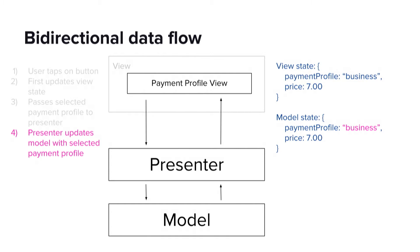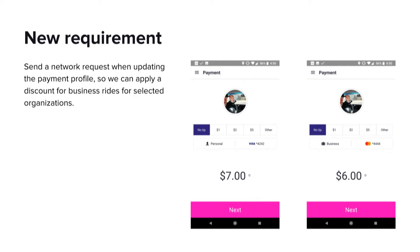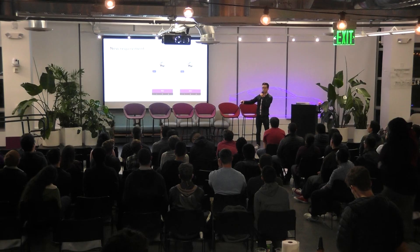But what happens when we get a new product requirement? When the passenger selects the payment profile, our application has to send a network request to refetch the price of the ride. Suppose that Lyft has written an enterprise contract with an organization so that all of the business rides for this organization are discounted by a dollar. Now when the passenger selects the payment profile, the price also changes from $7 to $6.